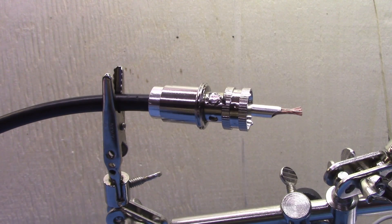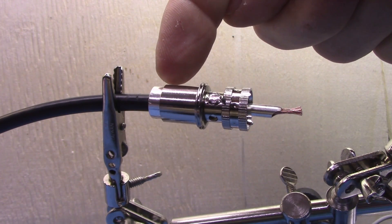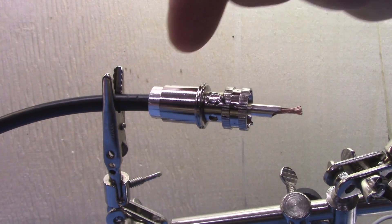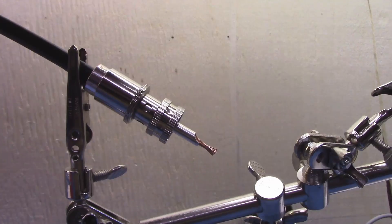Now this does two things for us. It makes sure that that reducer doesn't unscrew itself, but it also makes sure that we have a good electrical connection with the reducer to the body of the connector. All right, now I'm going to trim the center conductor.